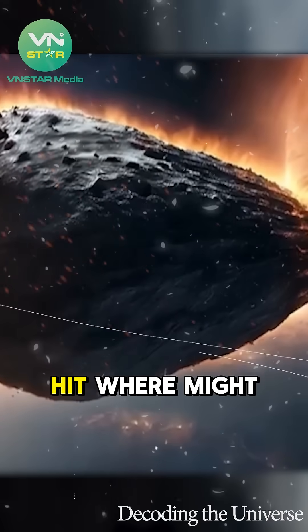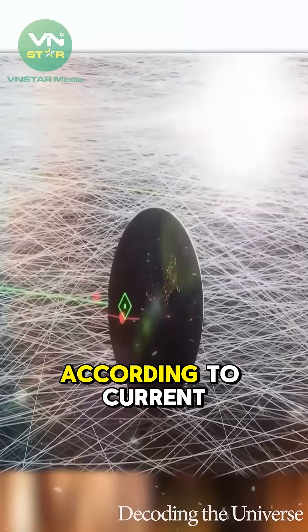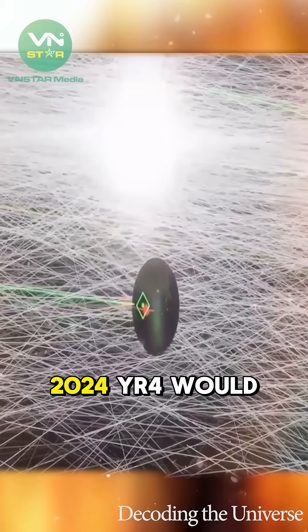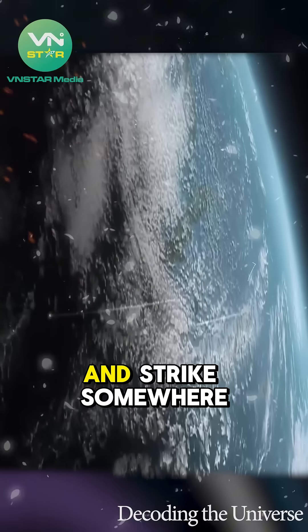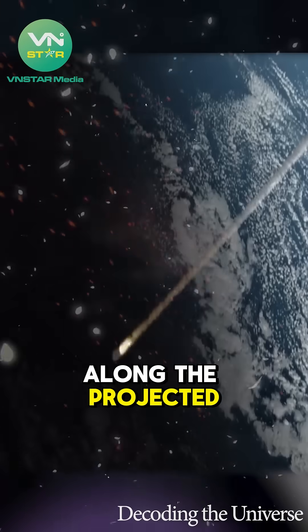If it does hit, where might it land? According to current projections, 2024 YR4 would sweep in from the inner orbit of Earth and strike somewhere along the projected red impact line.